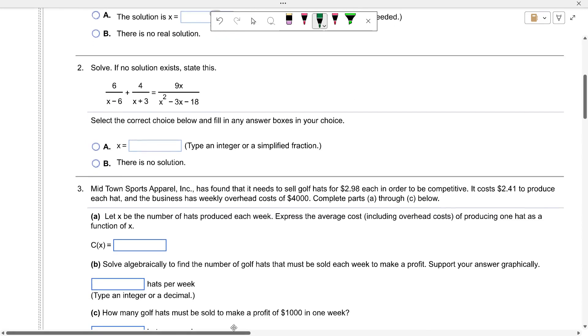On this one, the denominator on this side is x minus six times x plus three. To solve this equation we multiply everything by the least common denominator: x minus six times x plus three. Then we cancel—the x minus six cancels here, the x plus three cancels here.